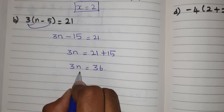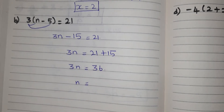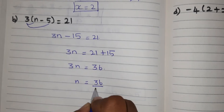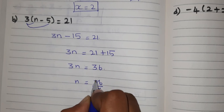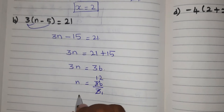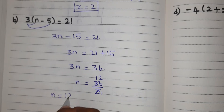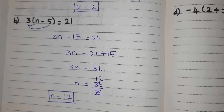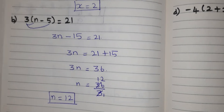It is 3 into n. When multiplication goes to the RHS side, it will become division. So 36 divided by 3 equals 12. The answer is n equal to 12. That's the answer for the second problem.